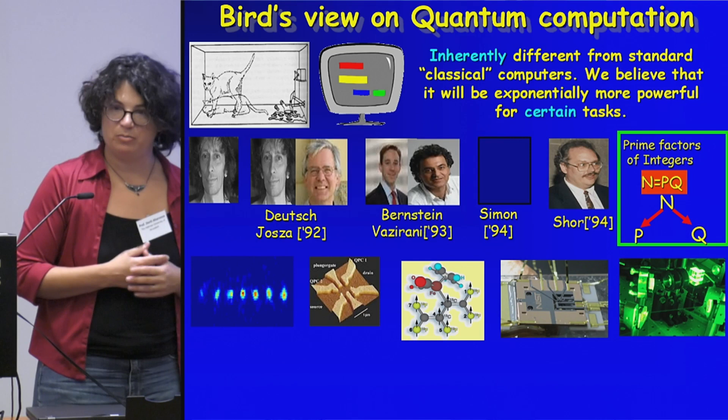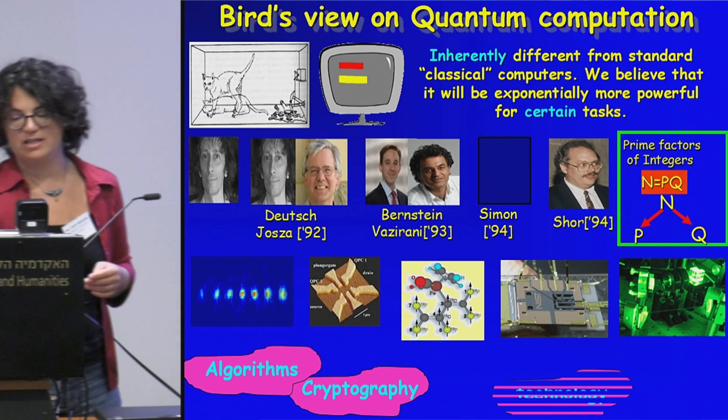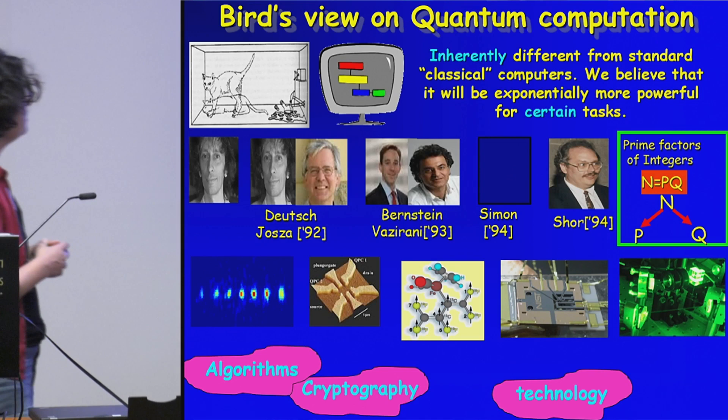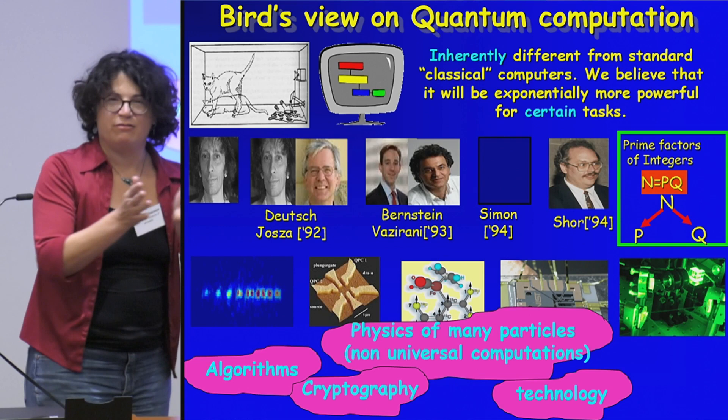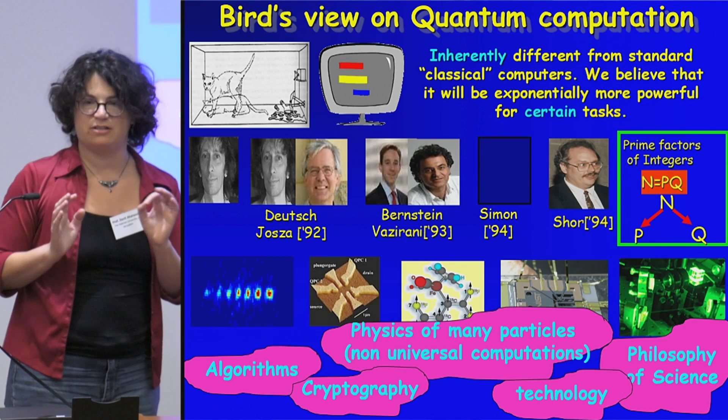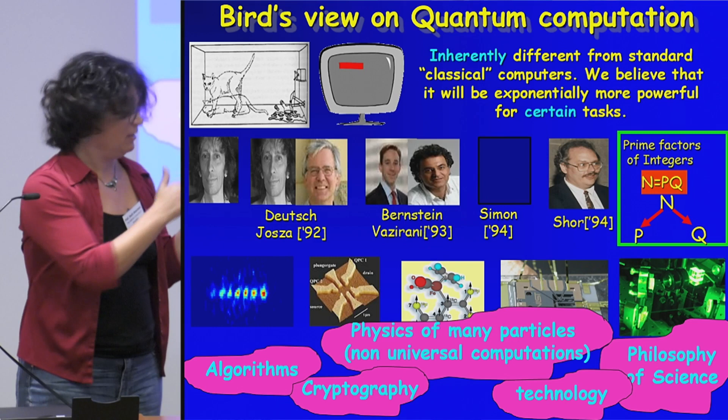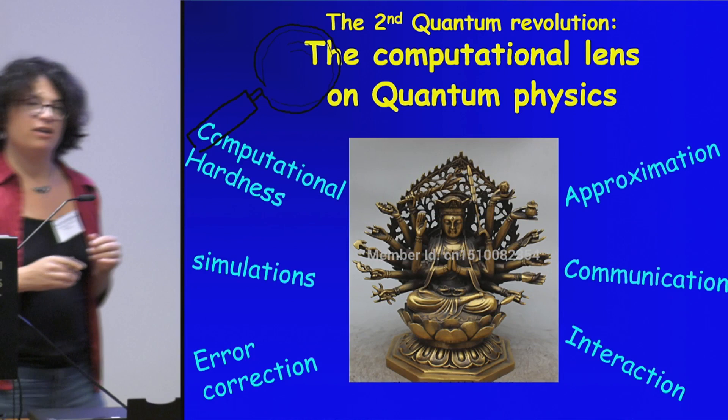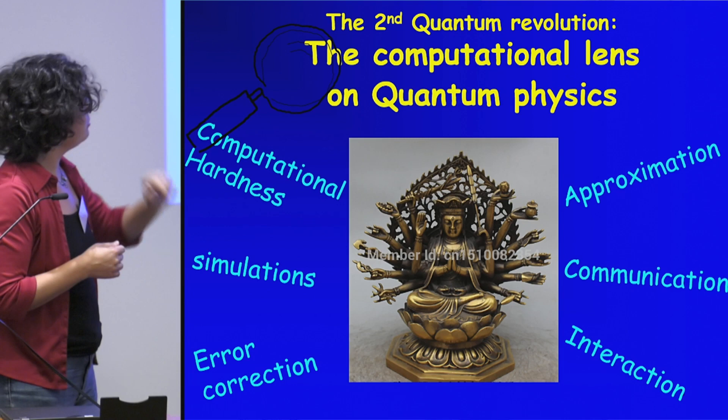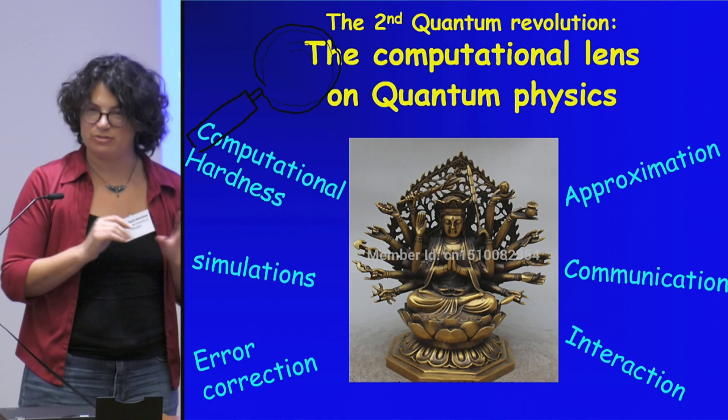But in my opinion, the real, the really interesting part is not just the technological potential and the revolution that's standing ahead of us, but also the amazing impact on physics, where the penetration of the language of computation is sort of really can be seen everywhere. And it even gets to the very understanding of what's a physical experiment, like something from philosophy of science, and I'll touch upon that later on. So to me, this is what I would call the second quantum revolution, the penetration of the computational lens into quantum physics through notions like computational hardness, simulations, error correction, approximation, communication, interaction. I'll give a hint to some of those during the talk.